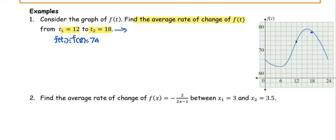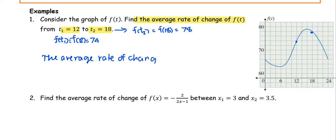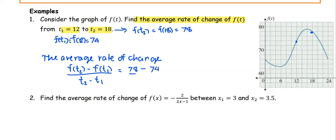The function value at t2 equals 18 is 78. So we are going to find the average rate of change, which is the function value at t2 minus the function value at t1, divided by t2 minus t1. Replacing with numbers: the function at t2 is 78, minus the function at t1 which is 74, all divided by t2 (18) minus t1 (12).